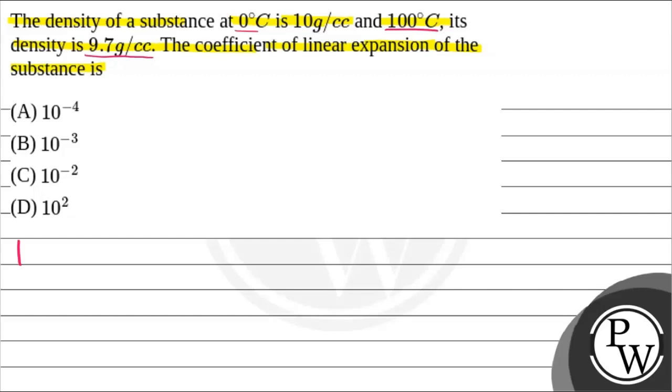We will start with the solution. But before we start, let's talk about the key concept which we are going to use for this question. The first one is the coefficient of volumetric expansion, which is represented by gamma, and equals (ρ₁ - ρ₂) divided by ρ₁ times the change in temperature, that is ΔT.